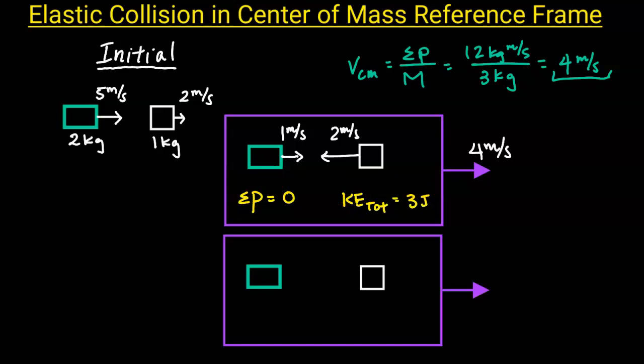Now we need to figure out what velocities these objects can have after the collision so that momentum is conserved and kinetic energy is also conserved. If we were to halve both velocities, momentum would be conserved; however, the kinetic energy would not. If we were to double both velocities, momentum would be conserved, but the kinetic energy would not. So the only solution we can have is to reverse the direction of the velocity. Object 1 has a velocity of 1 meter per second to the left, and object 2 has a velocity of 2 meters per second to the right. By keeping the magnitude of the velocity the same and just switching the directions, this ensures that the total momentum is equal to zero and that the total kinetic energy continues to be 3 joules.